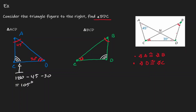Due to the third angle congruency theorem, angle C is congruent to angle D, so I know that angle D has a value of 105 degrees. But what is angle D? Well, angle D — which is what we have here — is this whole angle, which notice that that's the same as angle BDC. So we have found out the value of angle BDC: it is equivalent to 105 degrees.